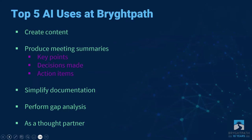The top five AI uses at Bright Path: content creation, producing meeting summaries with key points, action items, and decisions made, simplifying documentation, performing gap analysis, and using it as a thought partner. For our meetings, I often send clients a meeting recap to make sure we're clear on action items and who's doing what so nothing gets lost. After an hour-long meeting, you might not remember what you promised someone at the beginning. Using AI for that recap is a lot more efficient than trying to write everything down — I'd rather be engaging with the client and actively participating in the conversation than worrying about capturing notes for the recap email later.